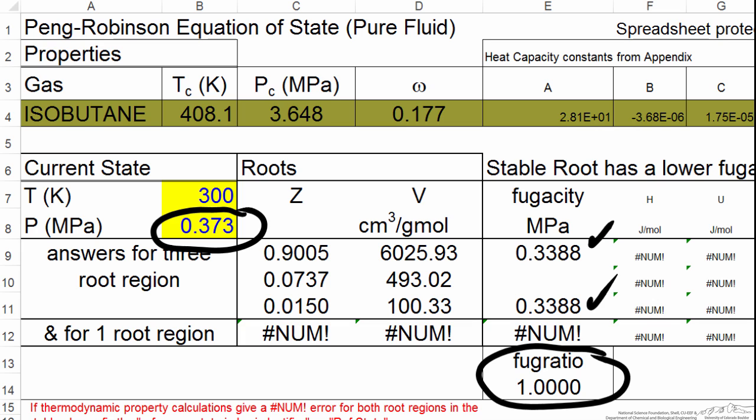Now note in this spreadsheet, I purposely reduced the number of digits being displayed compared to the original spreadsheet, just to make it a little easier to see. But you can see we can very quickly determine saturation pressure using an equation of state.